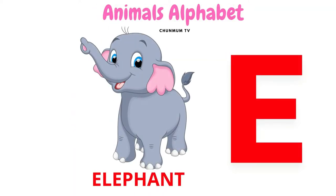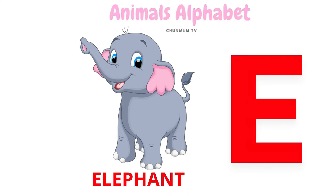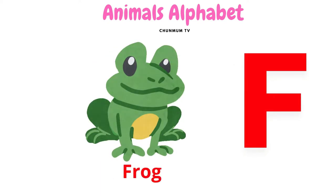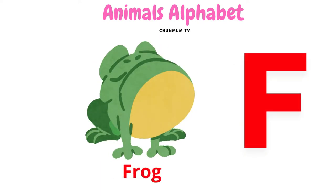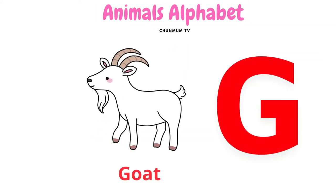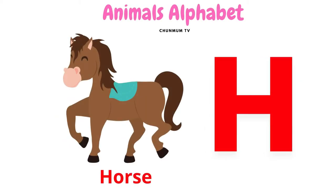E for elephant and how it sounds. F for frog and how it sounds. G for goat and how it sounds. H for horse and how it sounds.